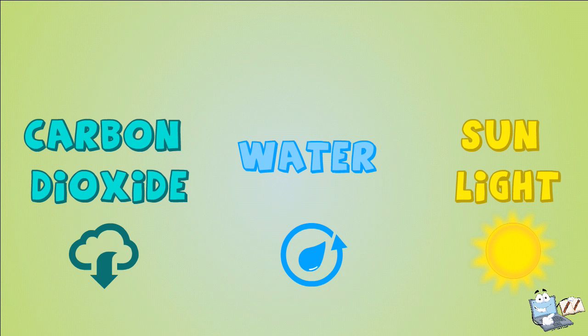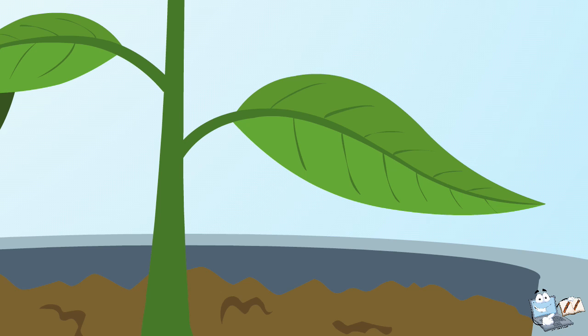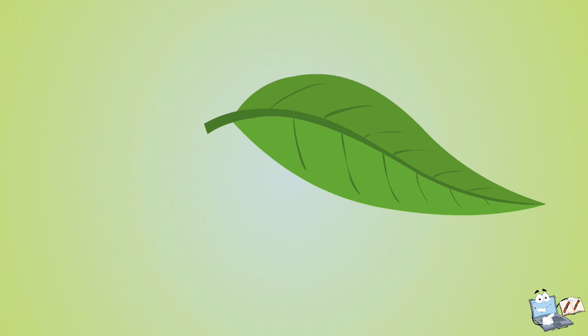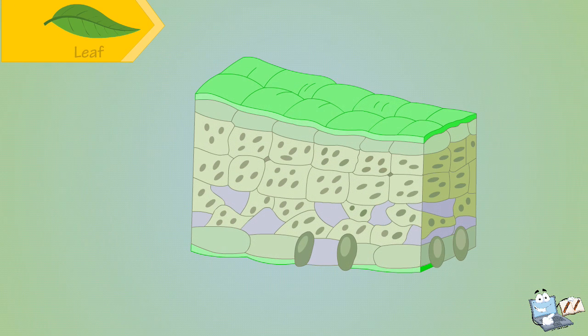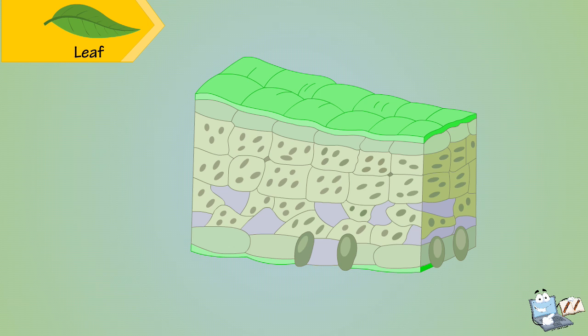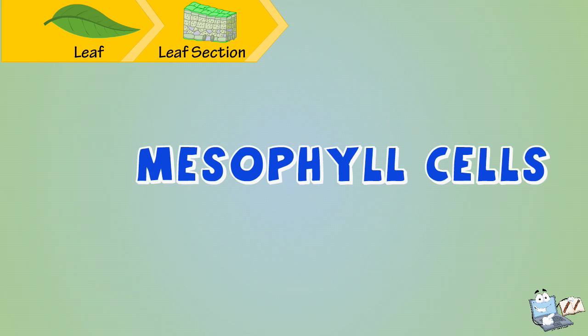Now the process will start. Most of the action takes place in the leaves of the plant. If we cut a leaf and observe it under a microscope, we see that right below the outer layer of cells, there is a layer of soft, elongated cells called mesophyll cells.